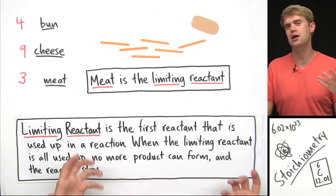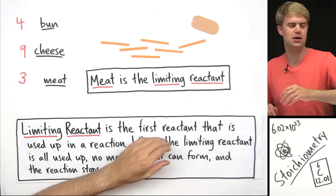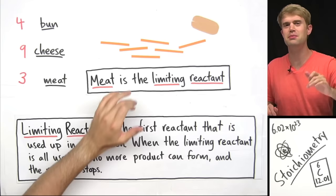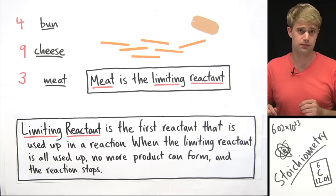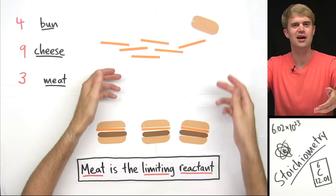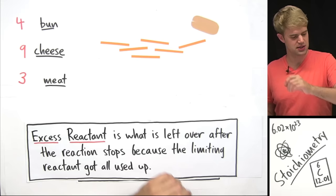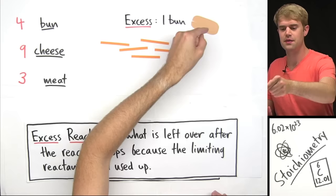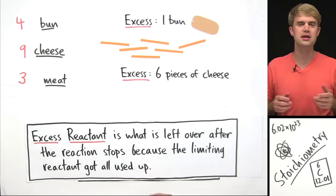We call it limiting reactant because it limits how much product we can make. It doesn't matter if we have a thousand buns or a hundred slices of cheese — once we run out of those three pieces of meat, we're done. The total number of cheeseburgers is completely dependent on the amount of meat, the limiting reactant. After we run out of meat, we still have extra ingredients: one excess bun and six pieces of cheese left over. These are what we call excess reactants — what's left over after the reaction stops because the limiting reactant got all used up.